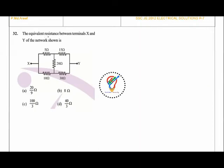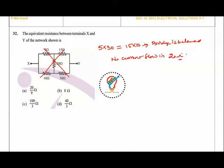Next question: find the equivalent resistance between X and Y of the network. For such networks, first check if the bridge is balanced. The cross arms are 5 and 30 on one side, 15 and 10 on the other. Since 5×30 = 15×10 = 150, the bridge is balanced. No current flows through the center 20-ohm resistor.